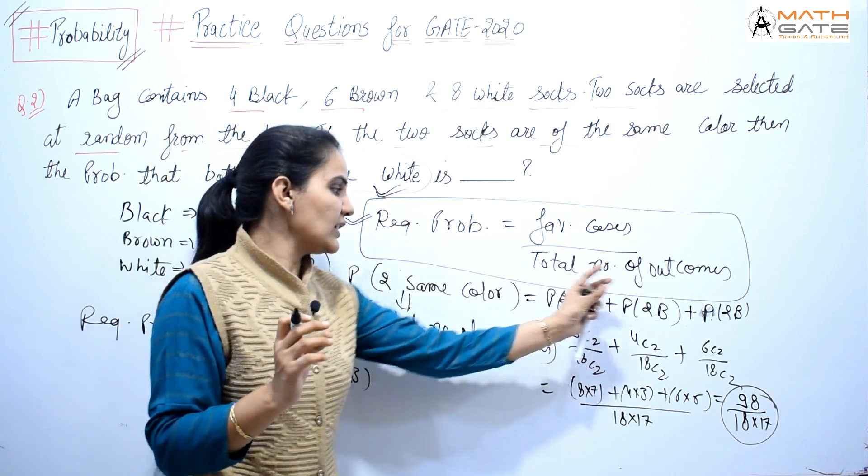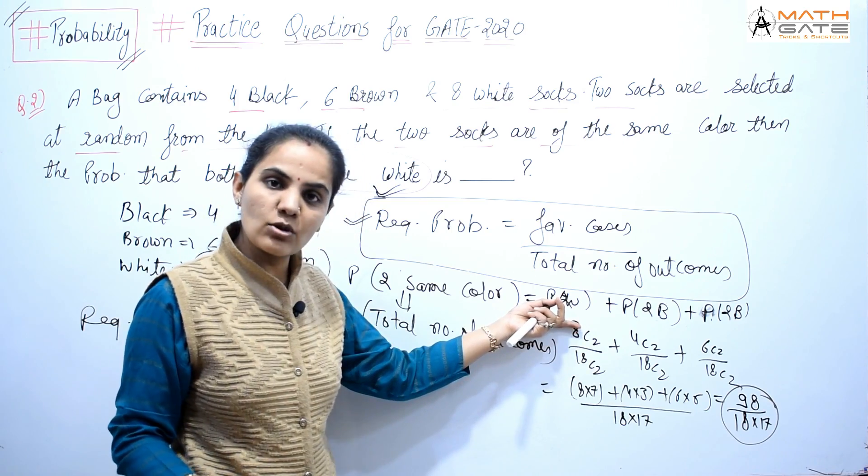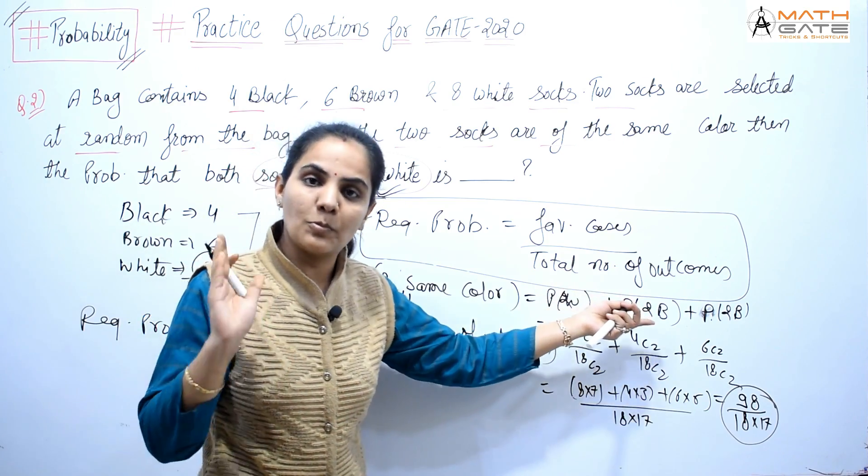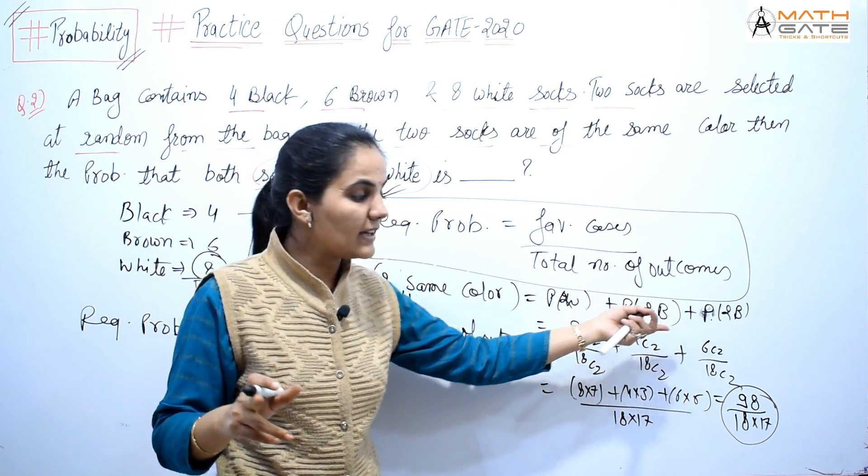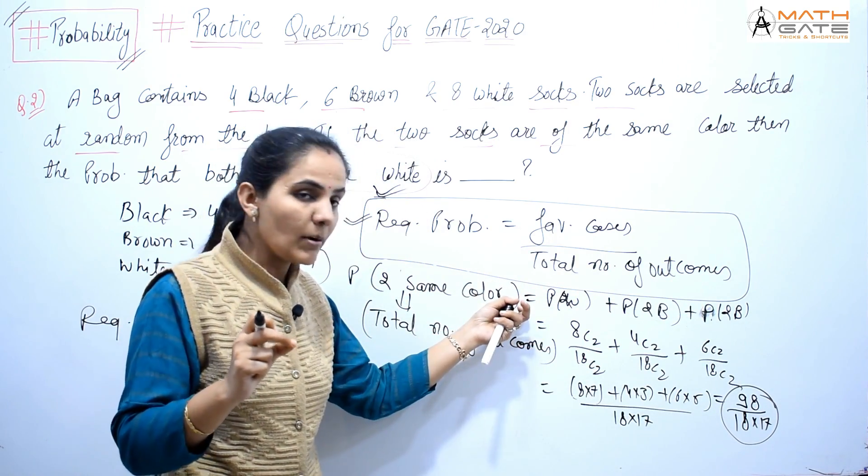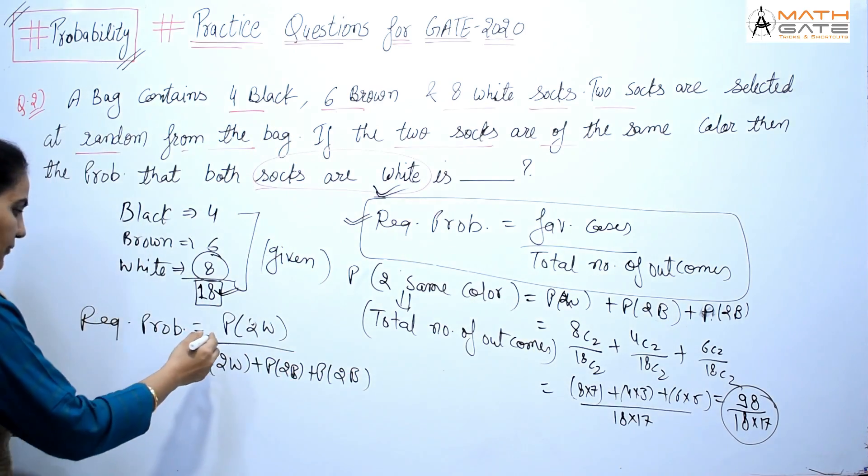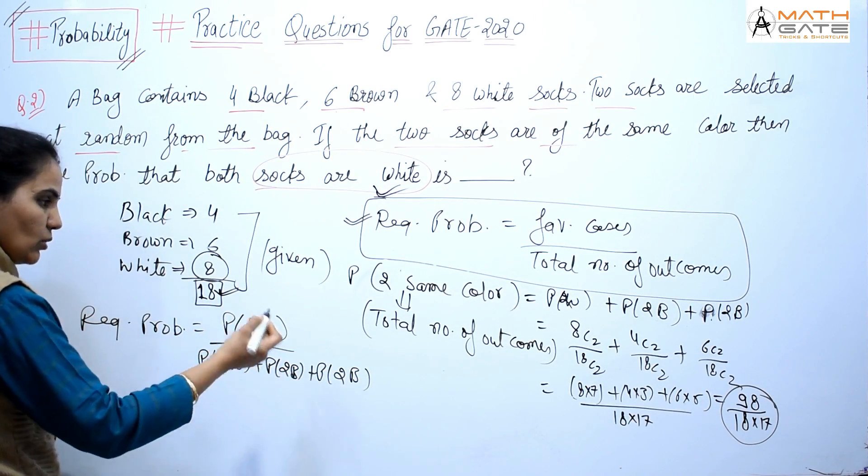If you don't think total number of outcome here, 18C2 is true. Just remember: the total number of outcome will be that which can satisfy the requirement. The requirement is that two same color of socks. Now, two same color of socks - how many types can be seen? Both white, both black, both brown also. So this is my requirement to follow. This is my total number of outcomes. Now let's talk about favorable cases. Which is favorable? Both white.